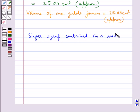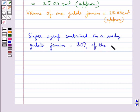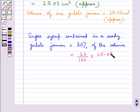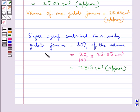The sugar syrup in a ready gulab jamun is equal to 30% of the volume, as given in the question. So this would be equal to 30/100 × volume of 1 gulab jamun, which is 25.05 cm³. This gives us approximately 7.515 cm³ as the sugar syrup contained in one ready gulab jamun.